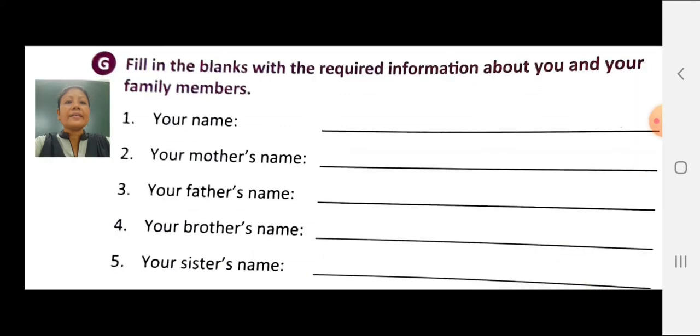Now exercise 2. Fill in the blanks with the required information about you and your family members. First number, write your name. Second number, write your mother's name. Third number, write your father's name. Fourth number, write your brother's name. Fifth number, write your sister's name. Do this exercise in your textbook.